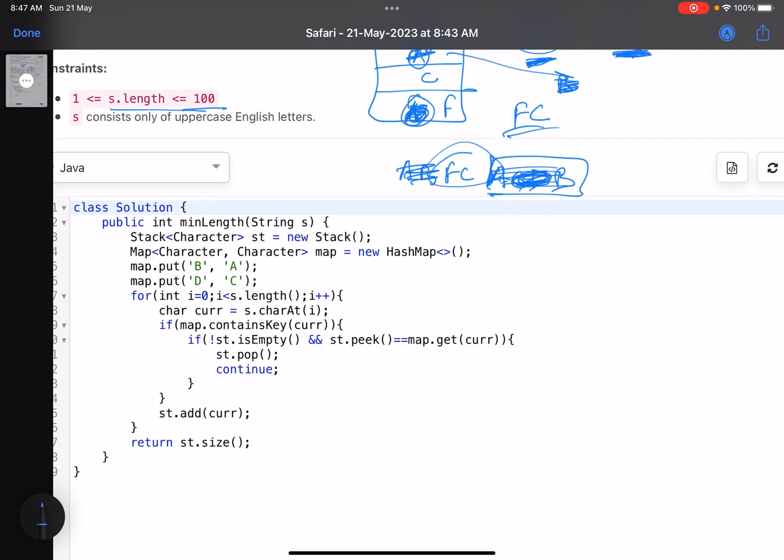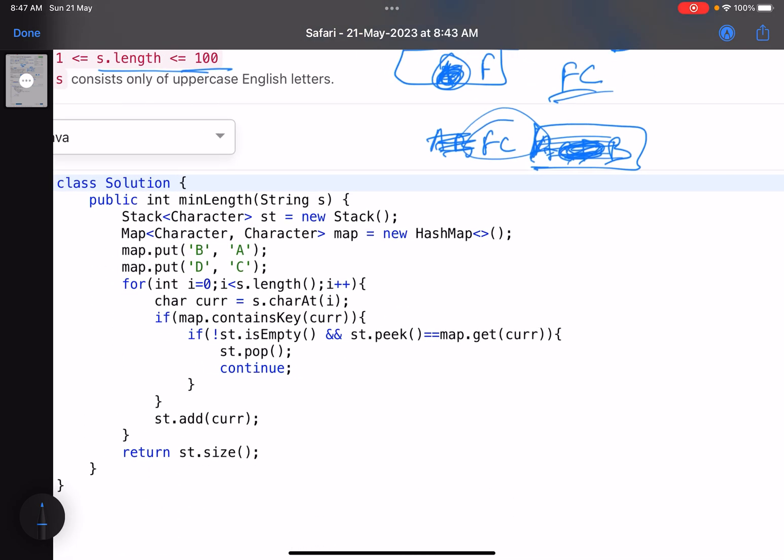So yeah, this is about the code. It's a simple one. I've used a stack here. I've taken a map because the code looks clean. You do not have to everywhere check if this is my current character, do this, do that.